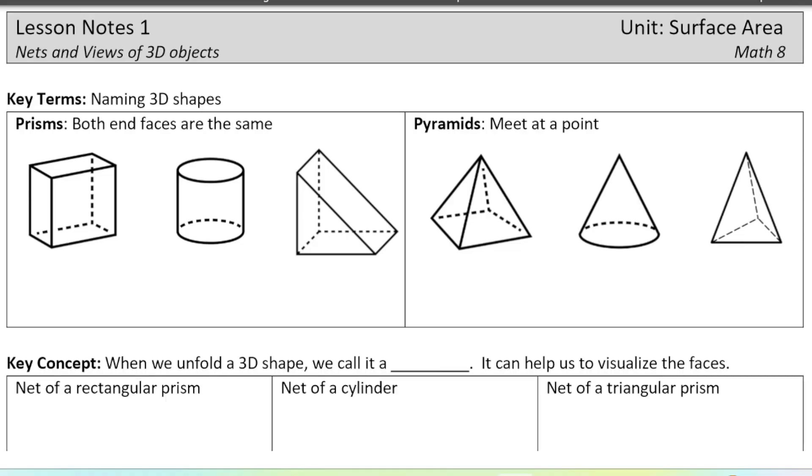So there's kind of two main categories of 3D shapes. One is prisms. Prisms have the same shape on the bottom and the top or the front and the back. So, for example, here a rectangular prism would have the same rectangle on the top as it does on the bottom. And then, so this is a rectangular prism.